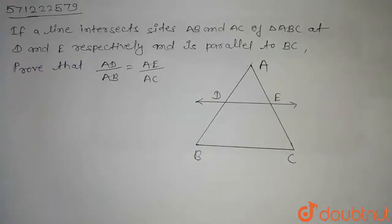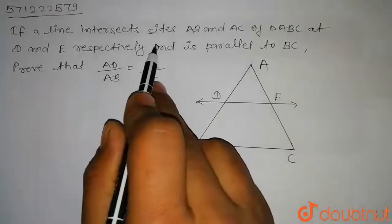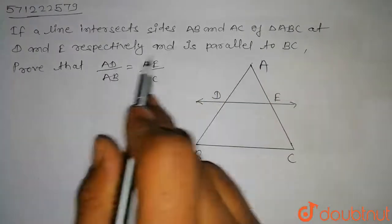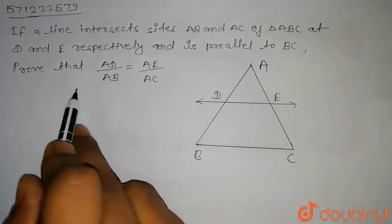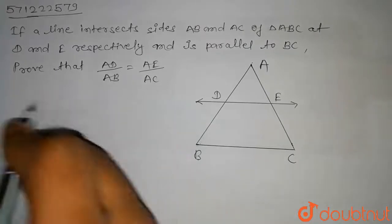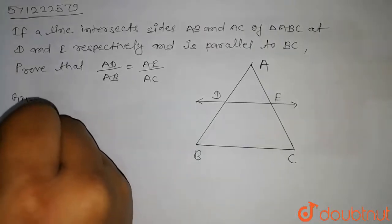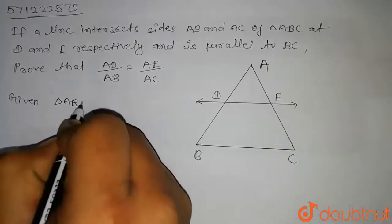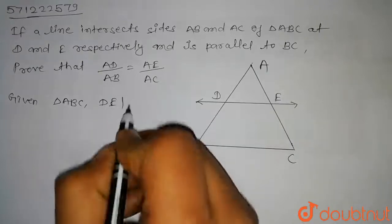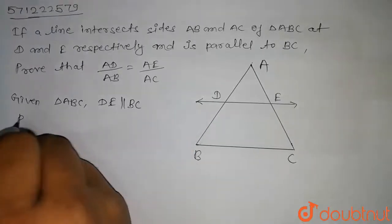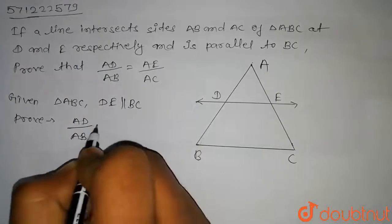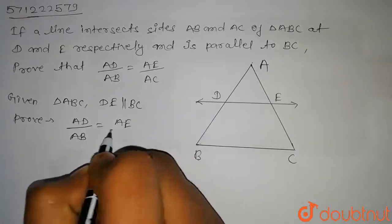Hello students, the question is if a line intersects sides AB and AC of a triangle ABC at D and E respectively and is parallel to BC, then prove that AD divided by AB is equal to AE divided by AC. In this question we have given triangle ABC in which DE is parallel to BC, and we have to prove AD divided by AB is equal to AE divided by AC.